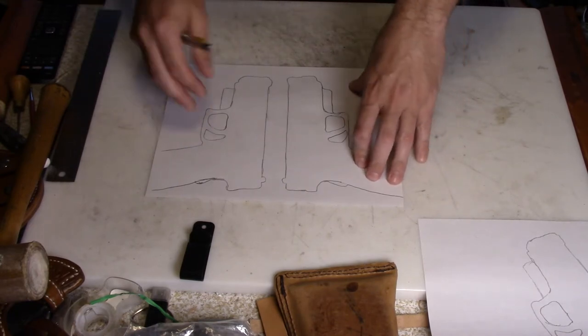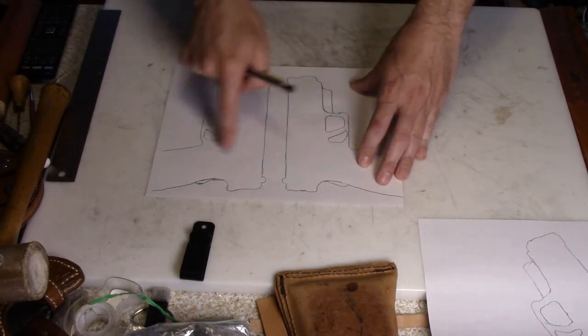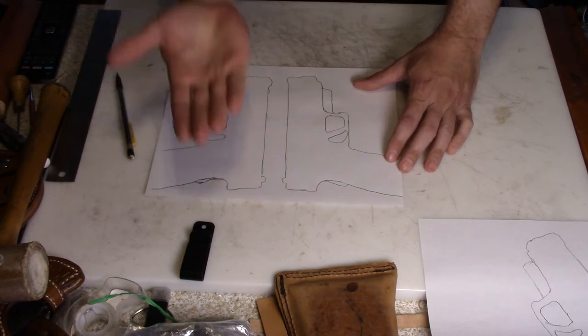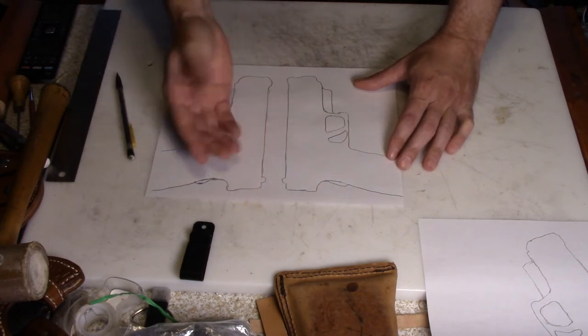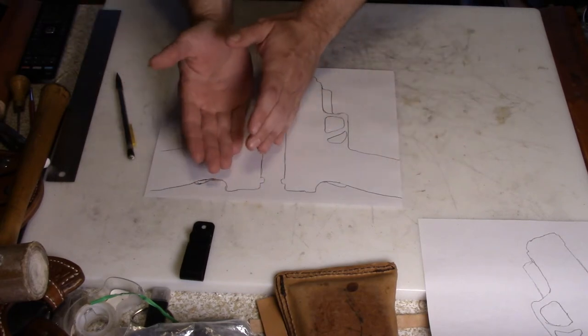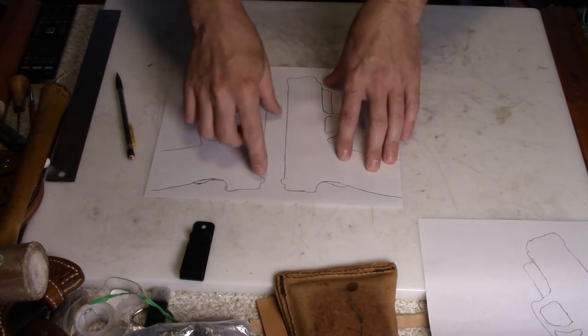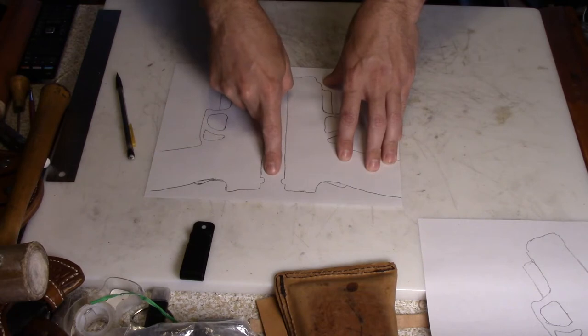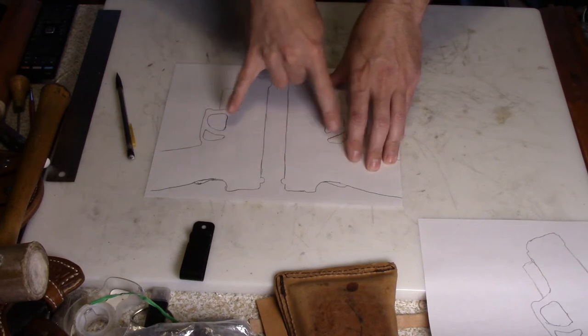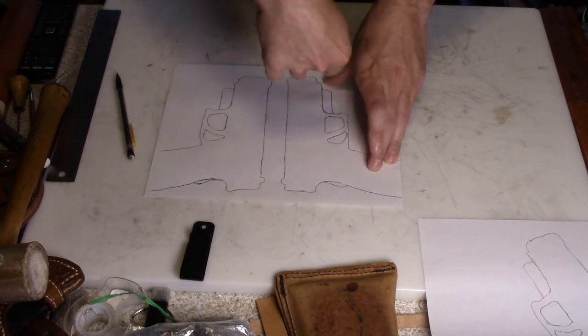As usual I start with a tracing. You'll see that the tracing is doubled - that's because I lay the firearm down, trace around it, then I roll it over on its side until it's laying the other direction. This gives me the thickness of the firearm as well as all the rest of the dimensions of it, and then I trace it around again.